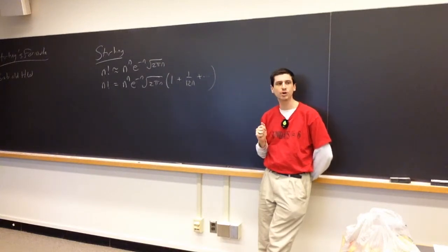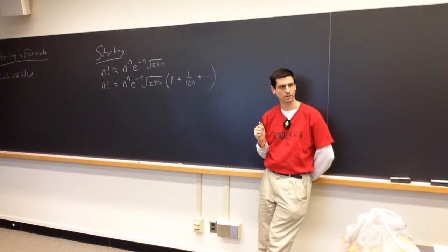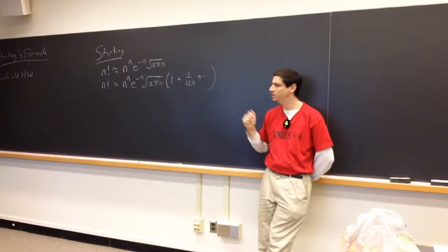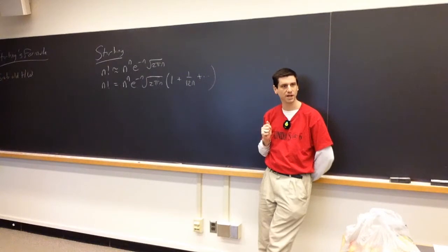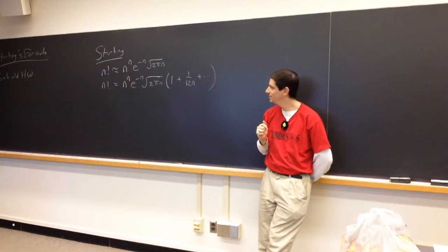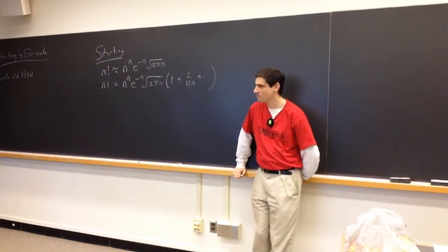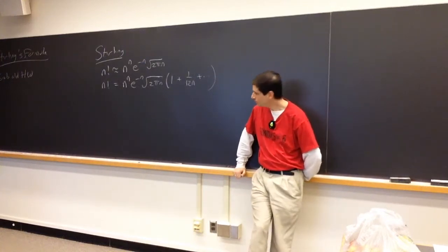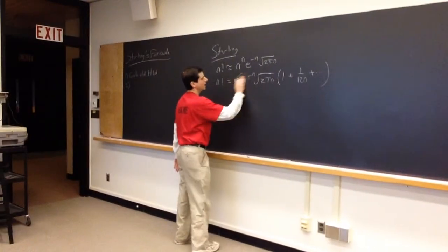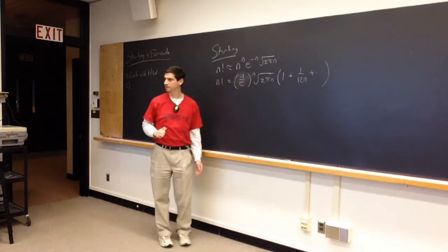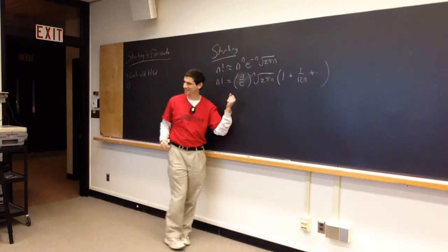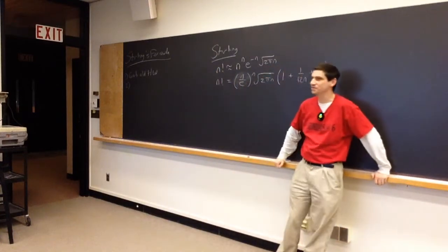Whenever you see a formula, you always want to ask: is this reasonable? Something should look a little bit strange as soon as you see this formula. One part that looks strange is e to the negative n — because it decreases as n gets bigger. But you can rewrite it as n over e, raised to the n. If I write it like that, maybe it's not so bad. But we still have the presence of e — why do we have an e here?